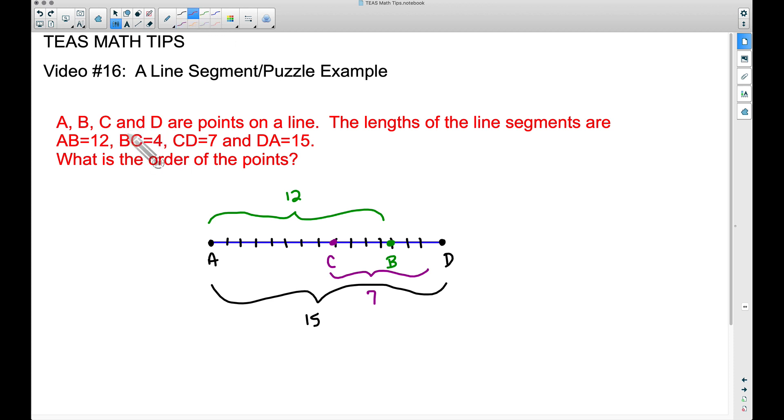And if we look here, that's exactly what we have. The distance from C to B is in fact going to be four units. So yeah, there's the answer.